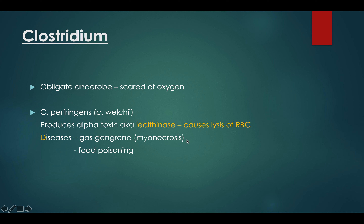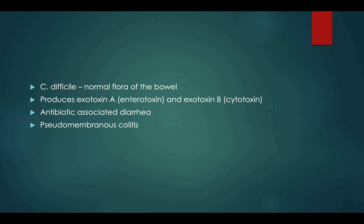When C. perfringens infects and releases lecithinase, it causes lysis of RBCs. RBCs transport oxygen, so when they're lysed, tissues become ischemic from lack of oxygen, and ischemia leads to necrosis — that's how gas gangrene happens. Remember the other name for gas gangrene is myonecrosis. Both names refer to C. perfringens or C. welchii.